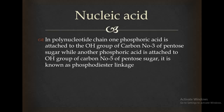Now if we have a polynucleotide chain, many nucleotide units are attached together. You can see that one phosphoric acid is attached to the hydroxyl group of carbon number 3 of one pentose sugar, while another phosphoric acid is attached to the hydroxyl group of carbon number 5 of the next pentose sugar. This linkage is known as phosphodiester linkage.